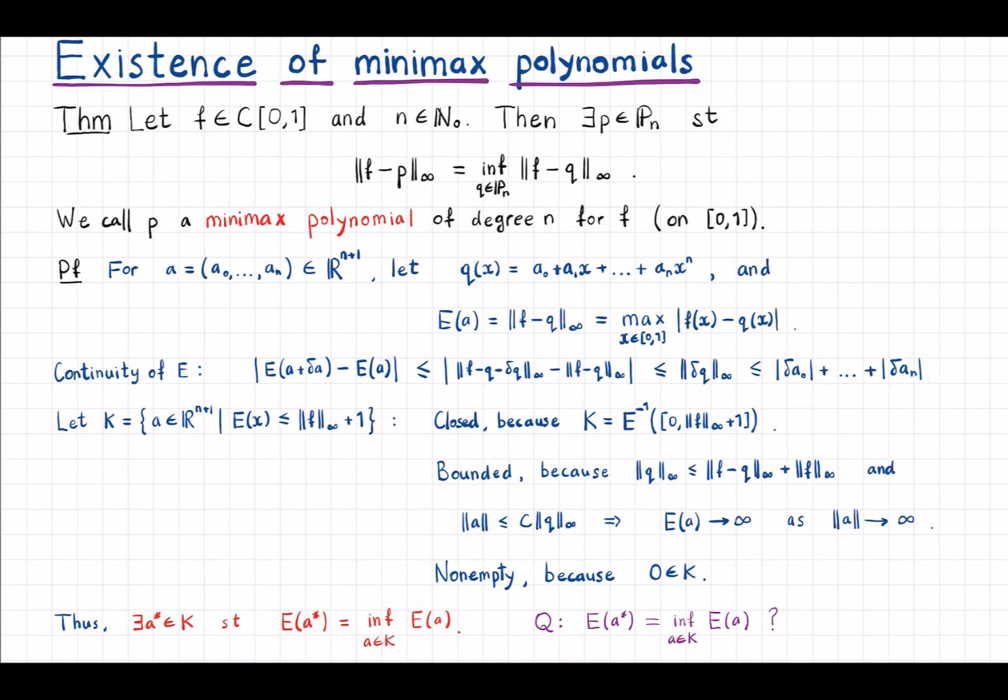Now we define this set K. K is the points in R^(n+1), so this is actually not x, this would be a. We collect all points a for which E(a) is smaller than the uniform norm of f plus one.